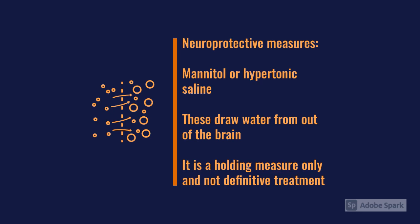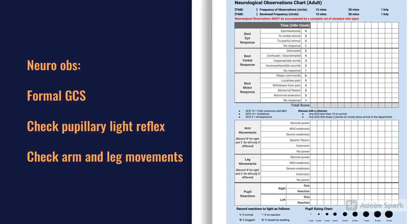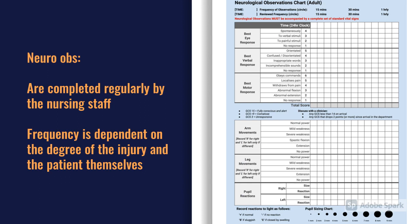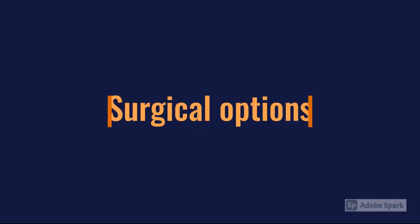Neurological observations involve a formal GCS, assessing pupil size and reaction ensuring they're equal left and right, assessing movement and equal strength bilaterally, and looking for facial drooping. If you're really worried about a patient with a severe head injury, do them every 15 minutes — the situation can change rapidly. If someone is not deteriorating or is reasonably stable, half-hourly, then reduce to hourly, two-hourly, and four-hourly depending on clinical state.